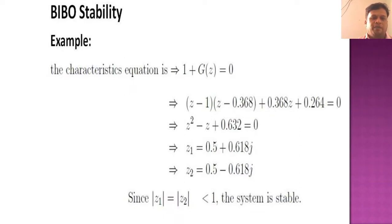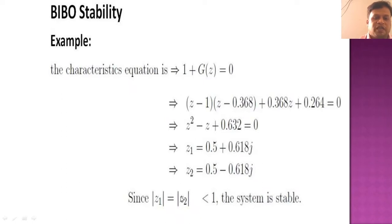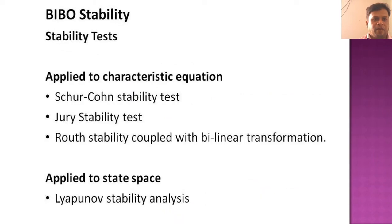The roots z₁ and z₂ have the same magnitude: modulus of z₁ equals modulus of z₂. We check whether the square root of (0.5² plus 0.618²) is less than 1. If less than 1 the system is stable; if not, the system is unstable. Now, the stability tests applied to the characteristic equation include the Jury stability test and the Routh stability test. Having already studied the Routh test, we now study the Jury stability test.